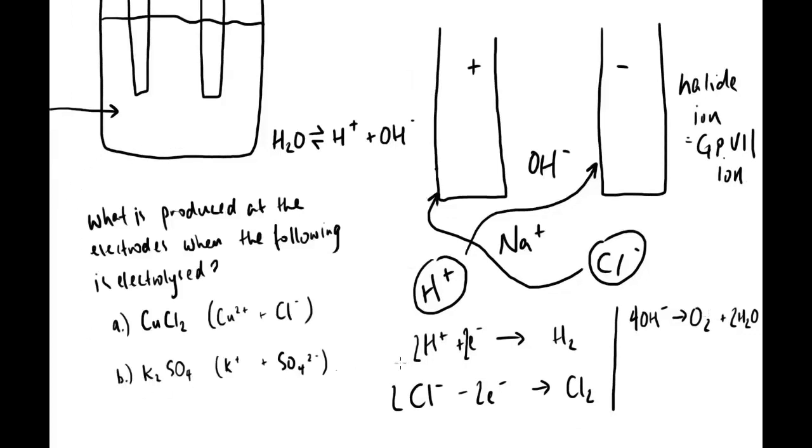OK, so I want you to have a go at this question here. So what is produced at the electrodes when the following is electrolyzed? Copper chloride, made of the copper 2+ ion and chloride ion, and potassium sulphate, made of the potassium ion and sulphate ion. Imagine that both are solutions, and I want to see what is produced at each electrode, and if you can, the half equation for each one of those reactions.